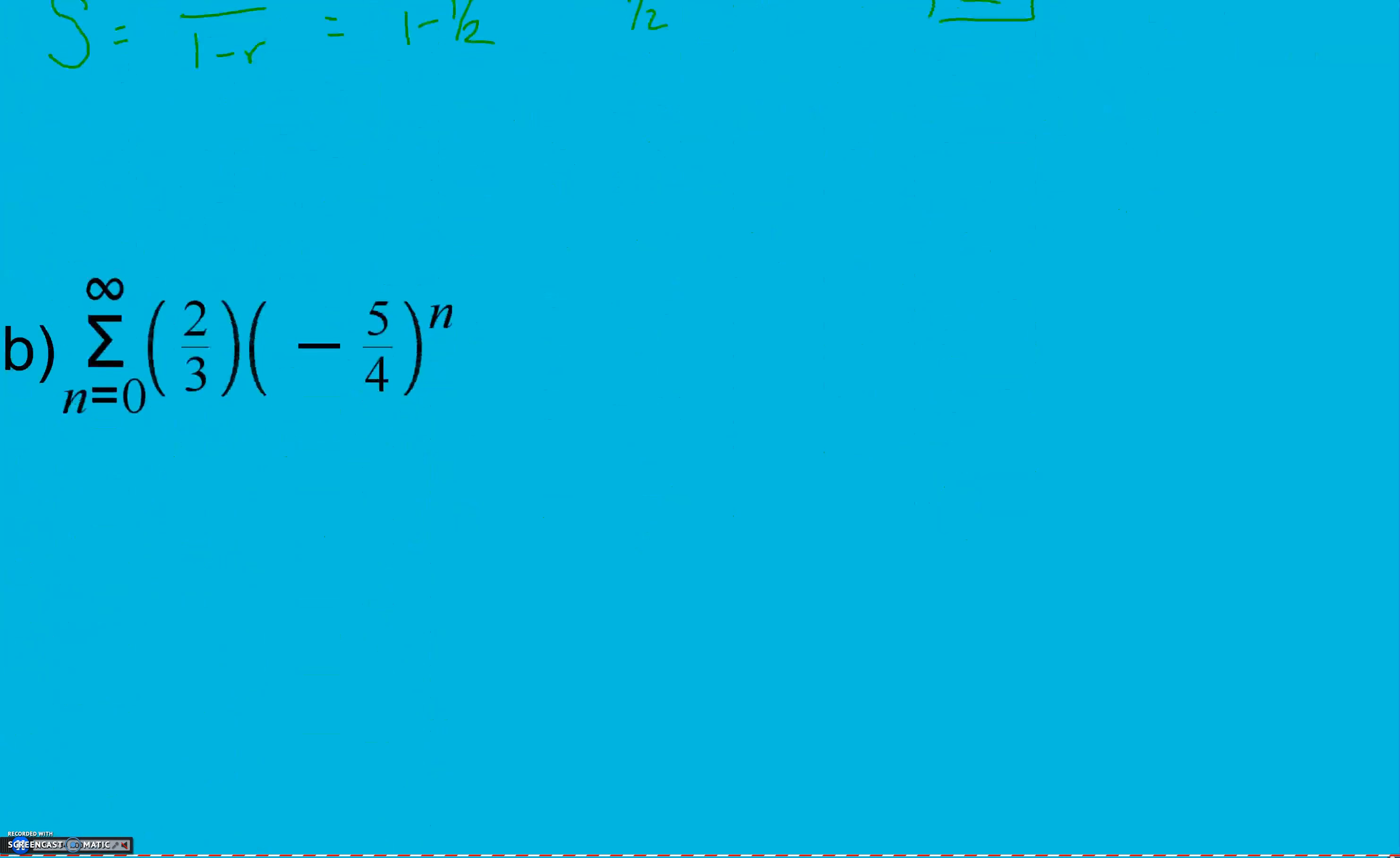Here, if we look, first term, common ratio. And the absolute value of negative five-fourths is greater than one, which means this is going to diverge. It's not going to go to one specific value because we can keep multiplying and it'll keep getting smaller and smaller.